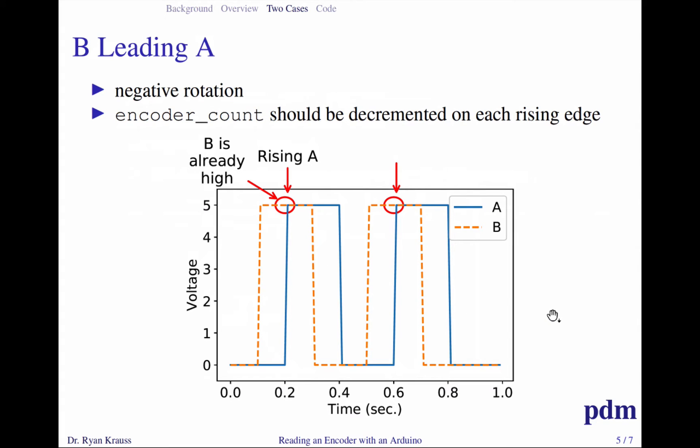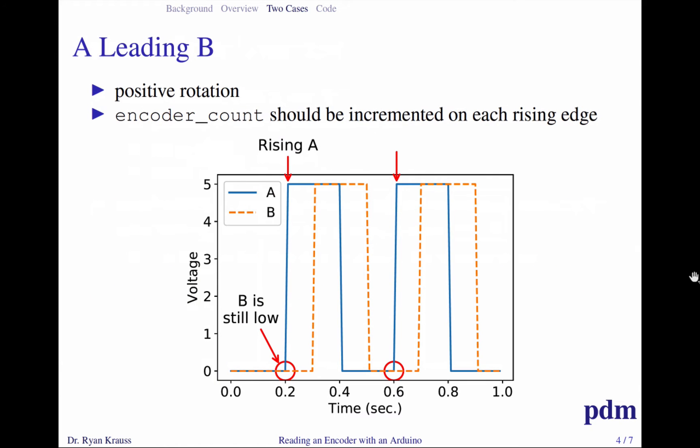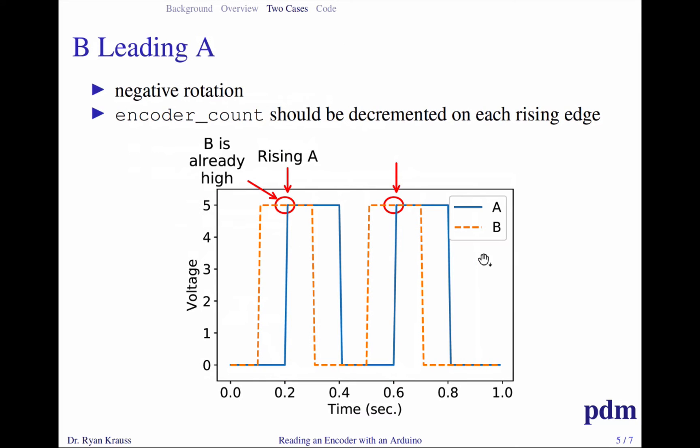This is what it looks like if B leads, and this is the situation when the ISR is called. The ISR doesn't know anything about other points in time; it only knows the rising A just happened, so it would have to read the state of B to determine am I in this situation where B is leading A, or am I back in this situation where A is leading B. Keep those two pictures in your head as you're trying to write an ISR that recognizes the difference between those two scenarios.